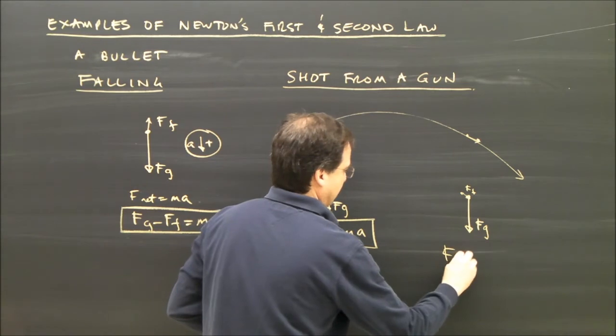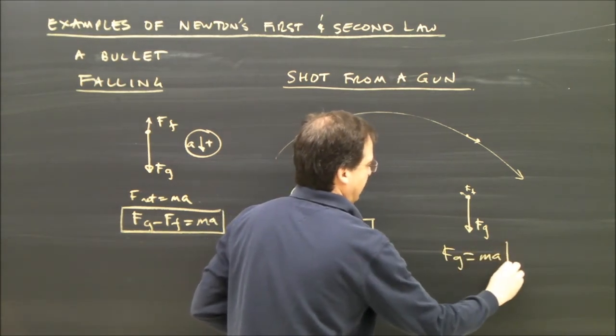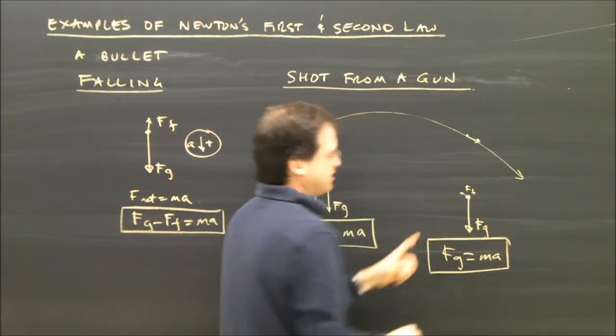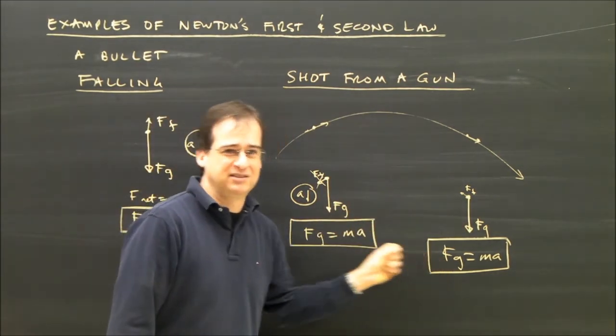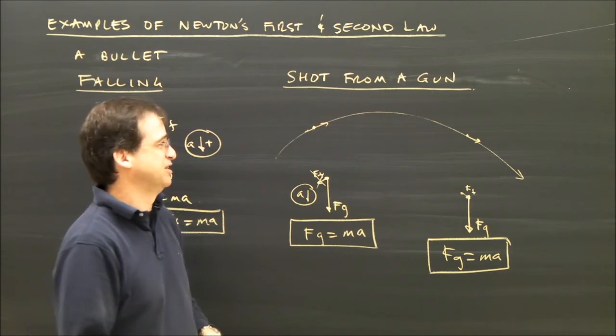I really end up with the same thing, Fg equals Ma, because I'm going to ignore friction. If you need to draw friction, you put it on the free body diagram, but it complicates this calculation, and you probably won't see that.